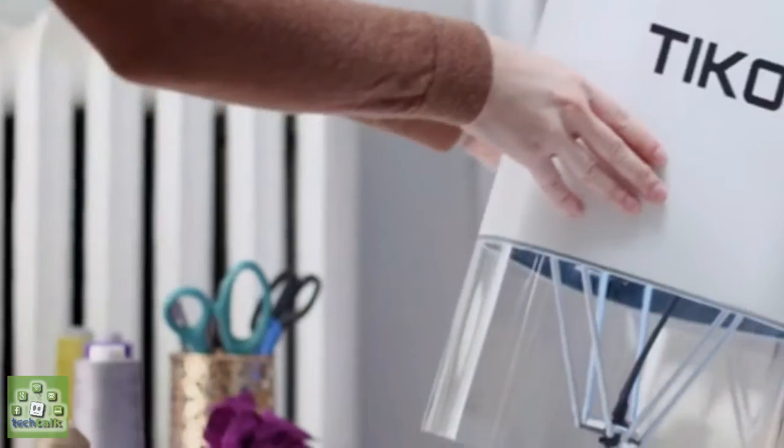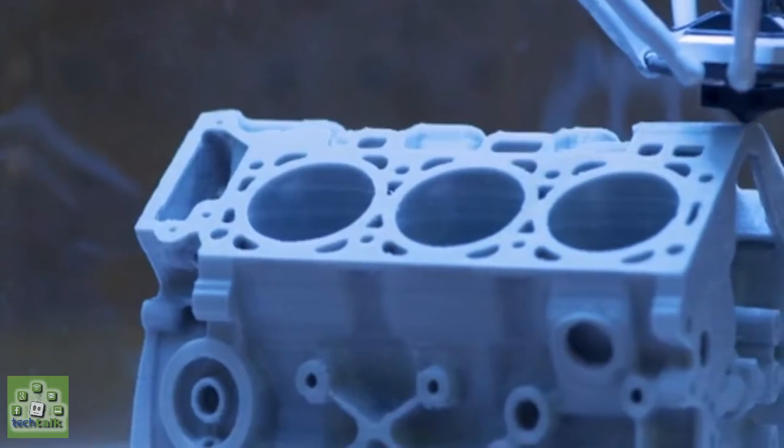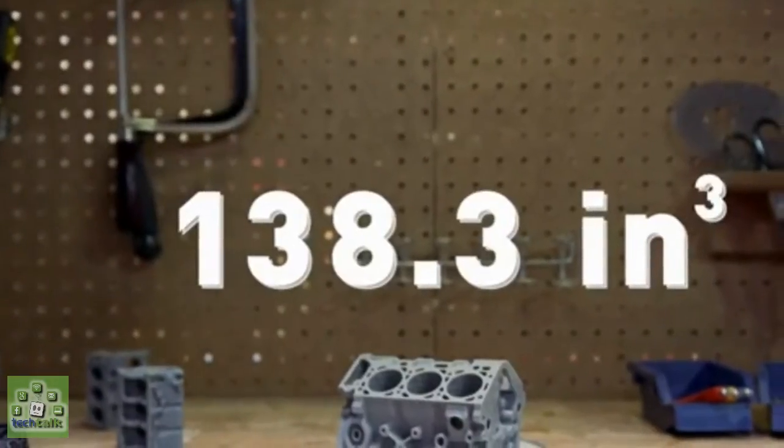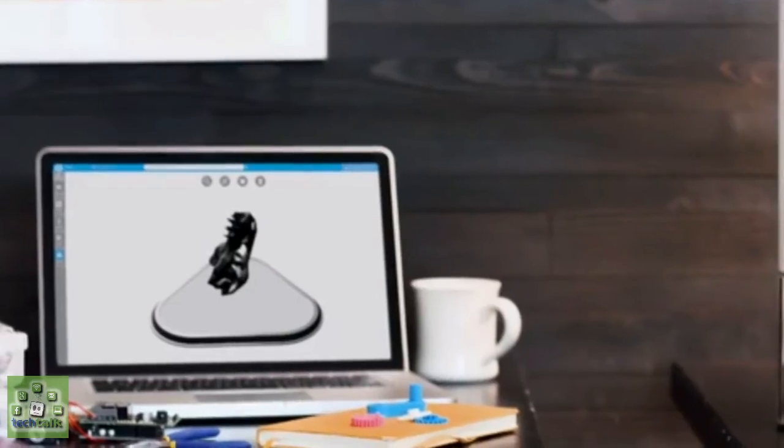So, what makes Tyco different? Most 3D printers have a multi-part frame. These are bulky, difficult to assemble, and easily damaged. This is where Tyco is fundamentally different.